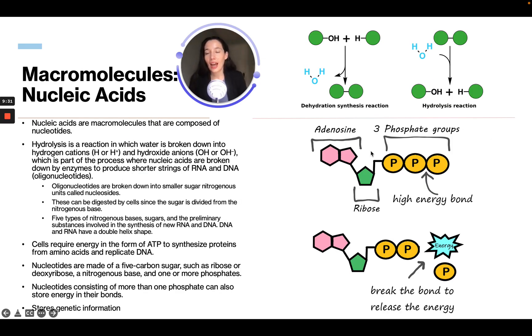Nucleic acids are macromolecules that are composed of nucleotides. Hydrolysis is a reaction in which water is broken down into hydrogen cations and hydroxide ions, which is part of the process where nucleic acids are broken down by enzymes to produce shorter strings of RNA and DNA. Oligonucleotides are broken down into smaller sugar nitrogenous units called nucleosides.